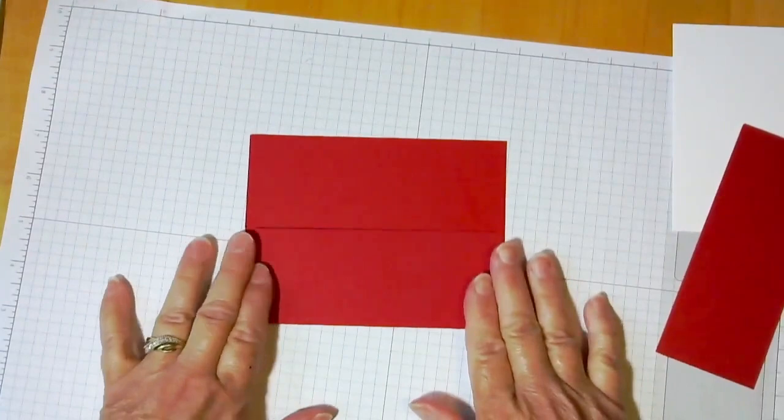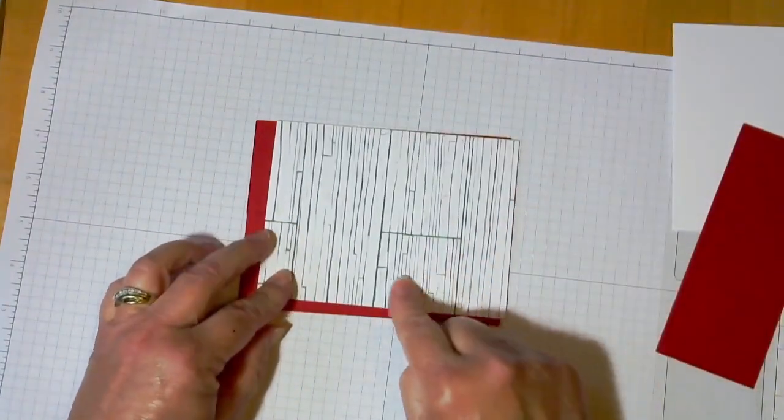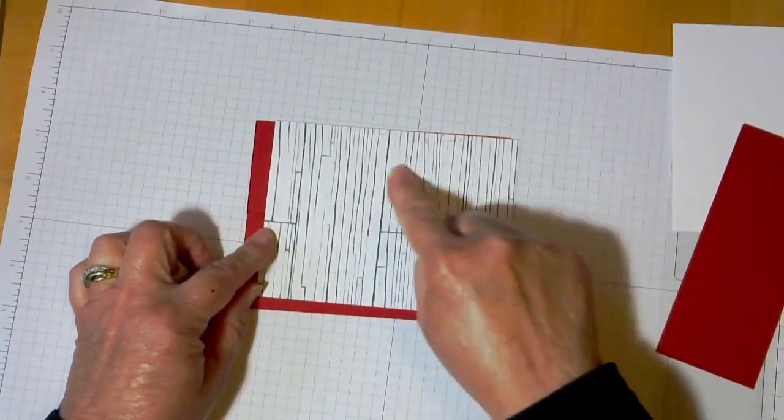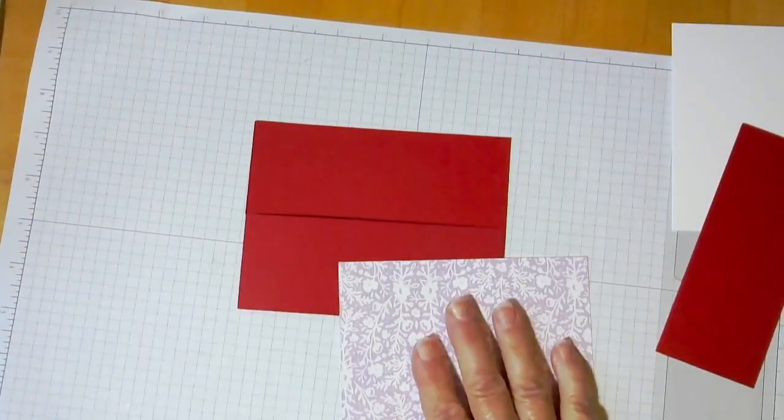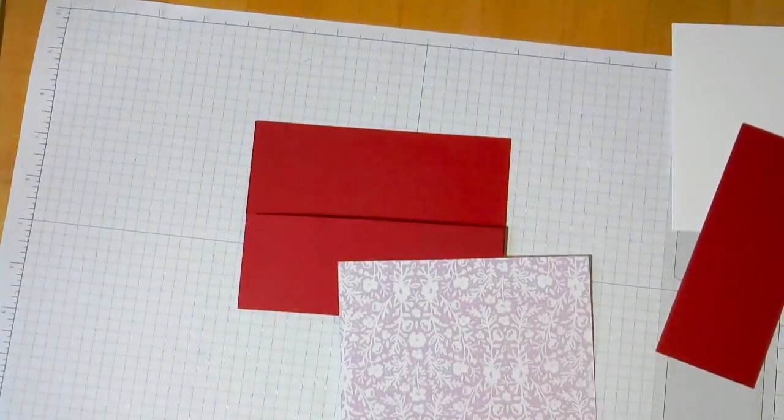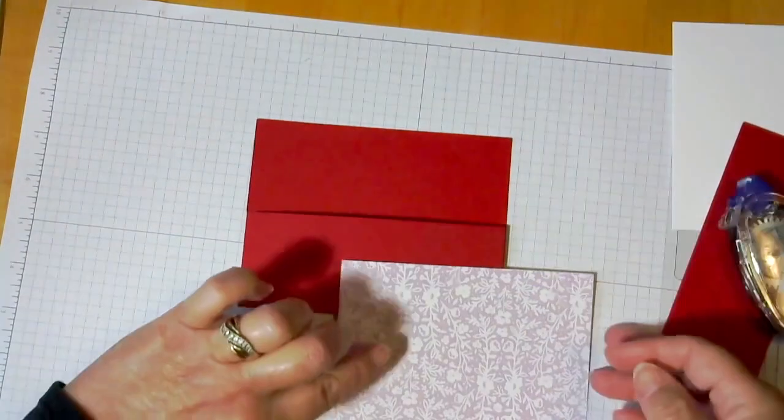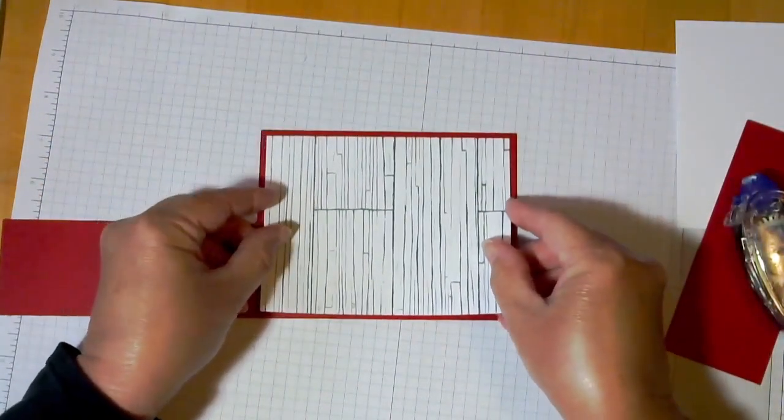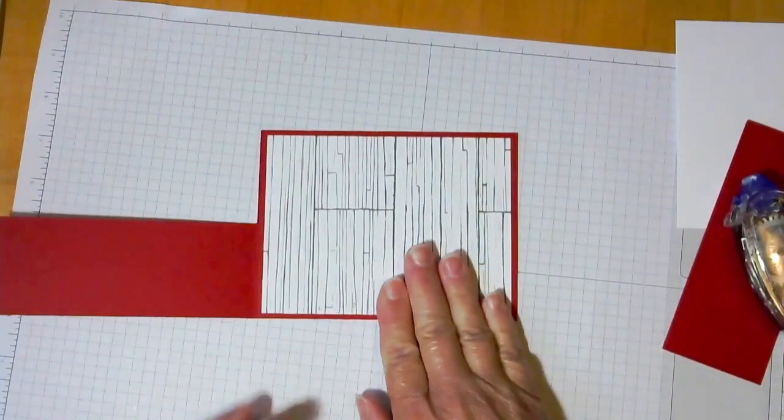So then we can start decorating. So we have a 4 by 5 1/4 piece of any kind of board look designer paper. This one is from Stampin' Up! The Heart and Home pattern. There are several different papers out there that you can find with boards. It seems pretty popular right now.